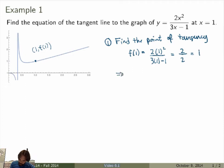So in other words, the point of tangency that I will write as a, f of a, is equal to (1, 1). Alright, so that was the first piece of data that we need to find the equation of the tangent line.